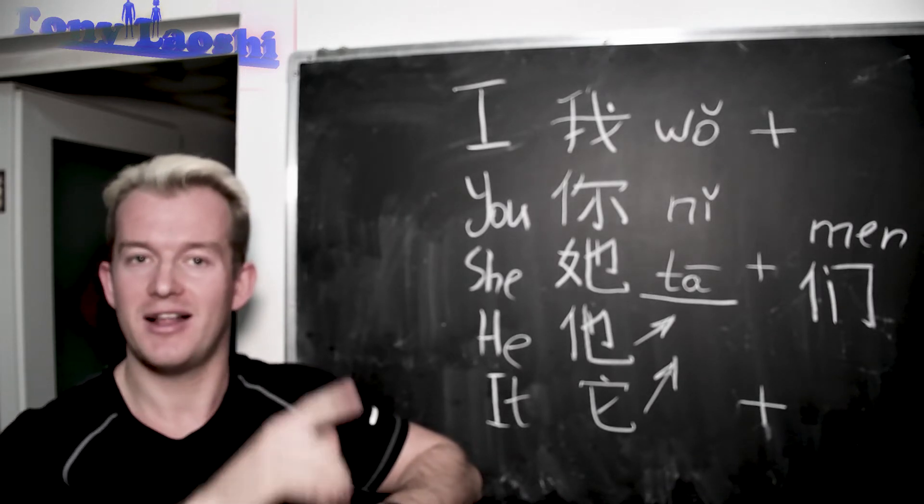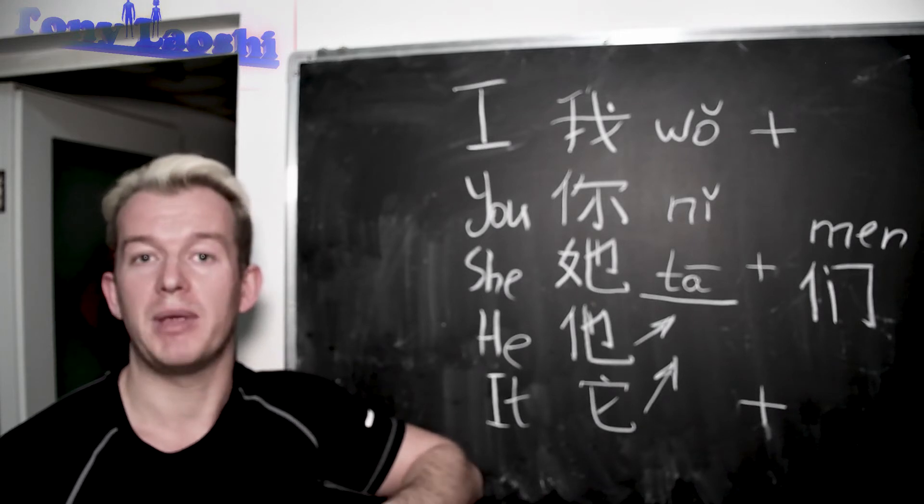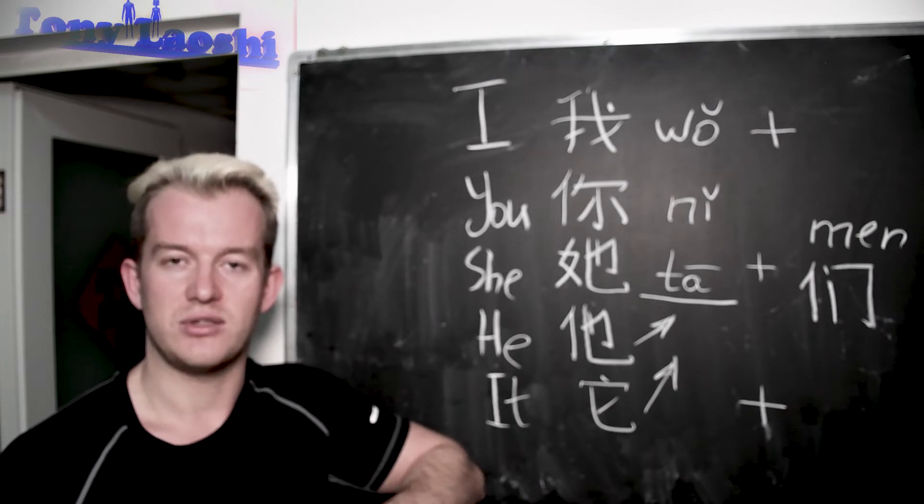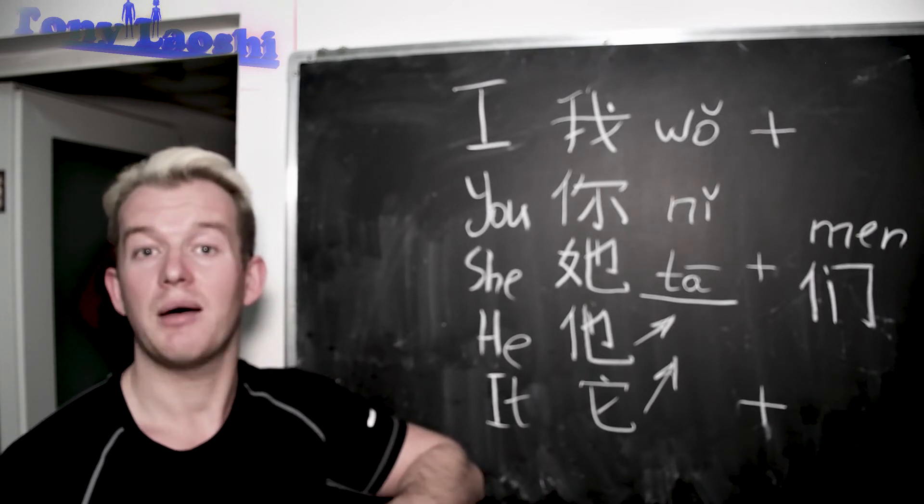他们, they. 它们, they. 他们, if they are males or it's just some people. 他们. Yes, it's incredibly convenient in Chinese to build the structure of they, them. We say 他们 and that's just enough.